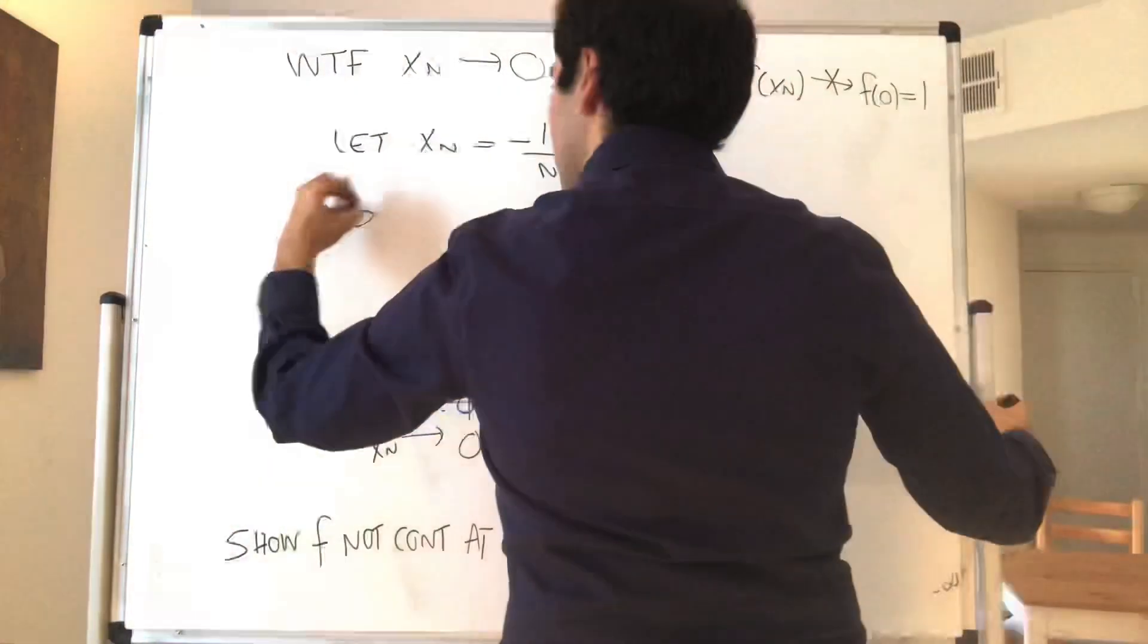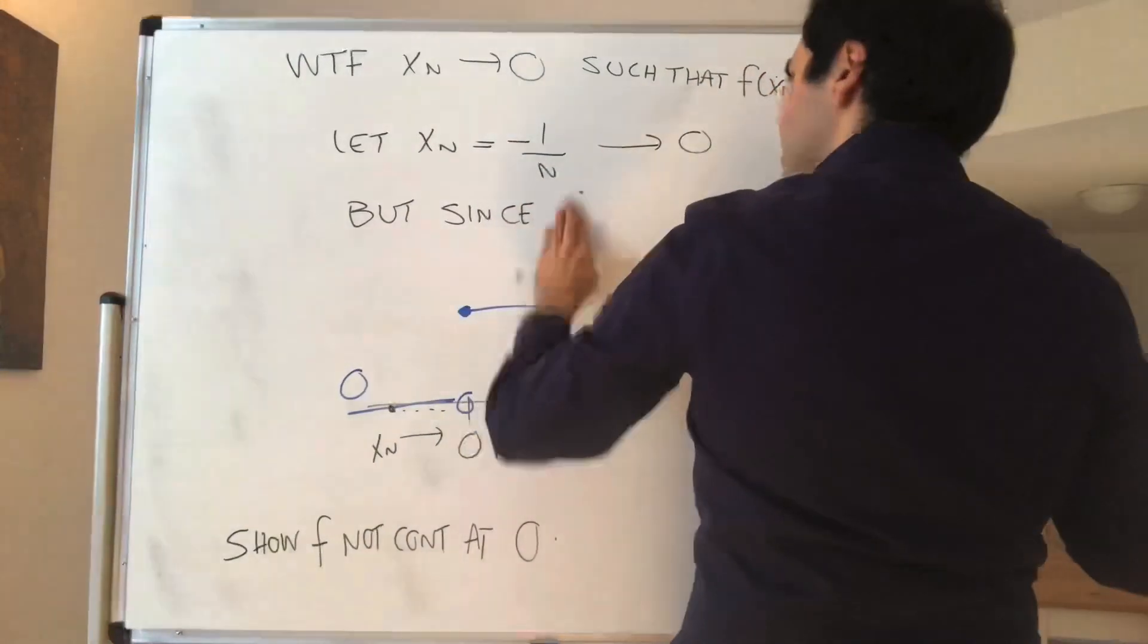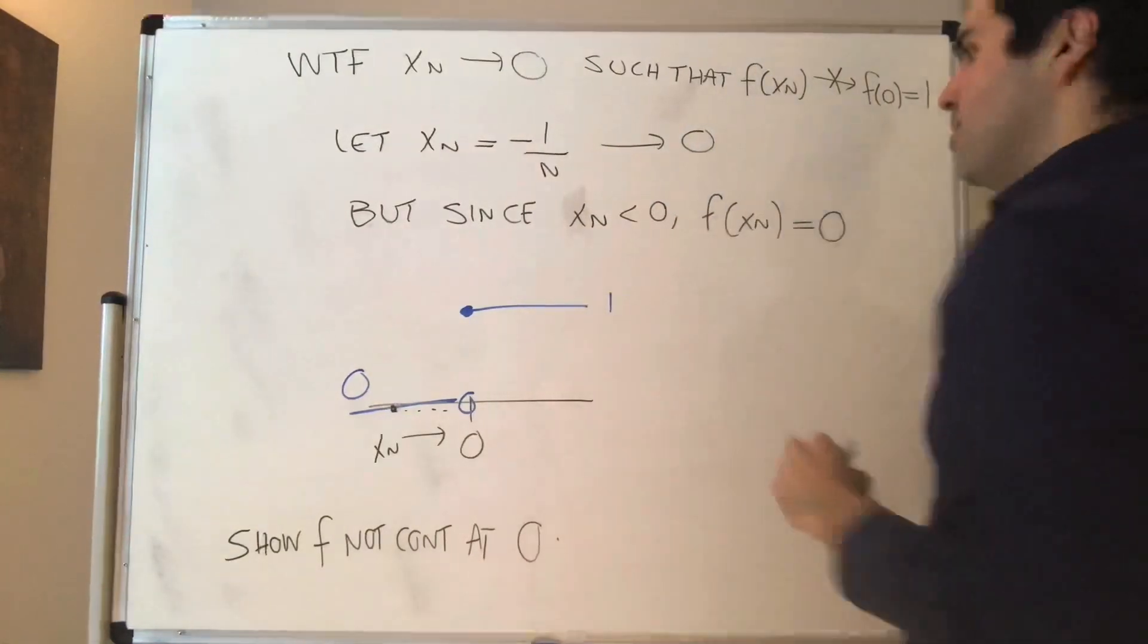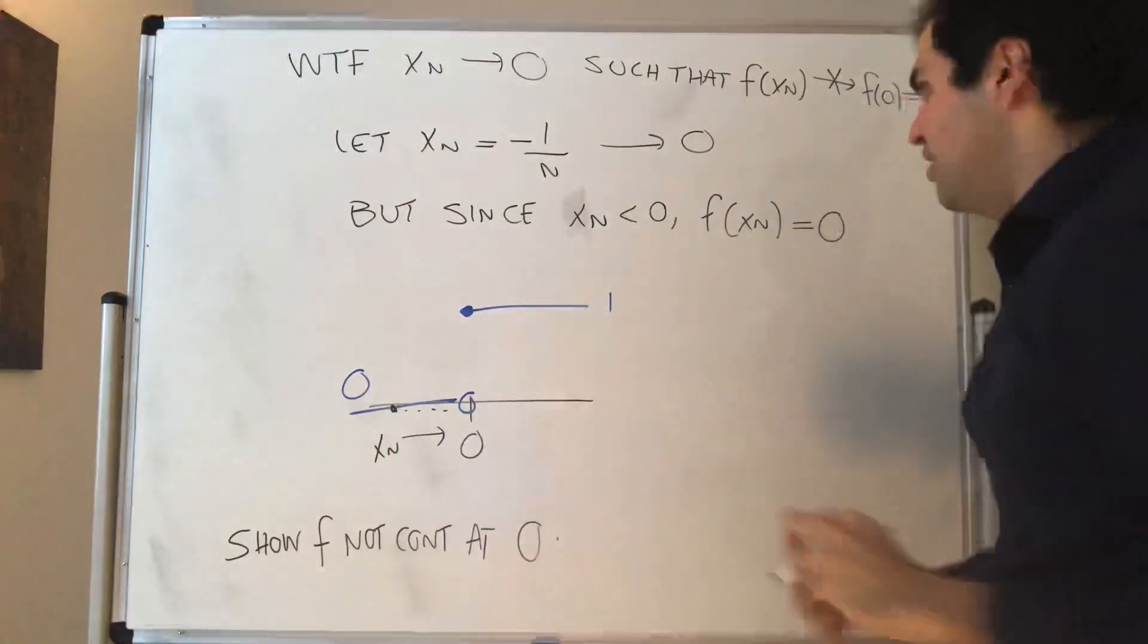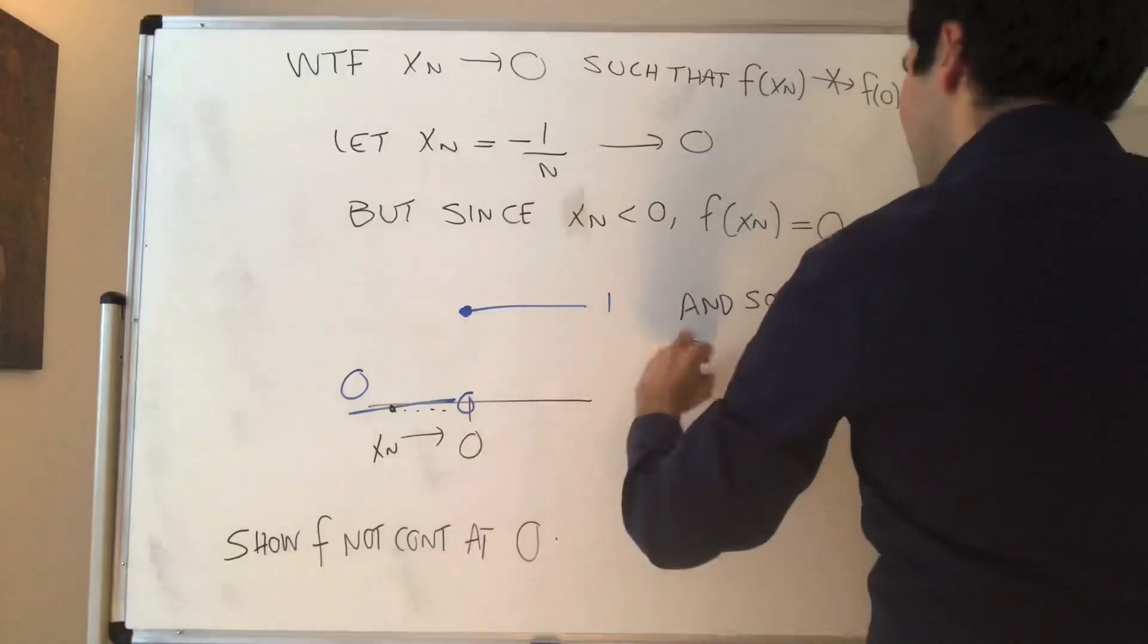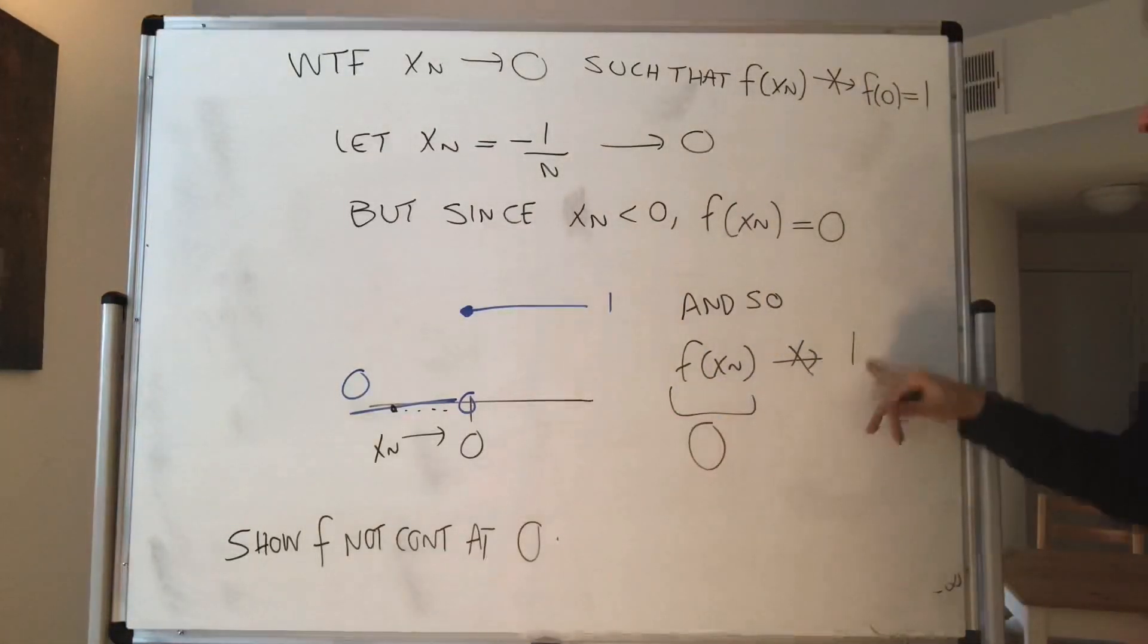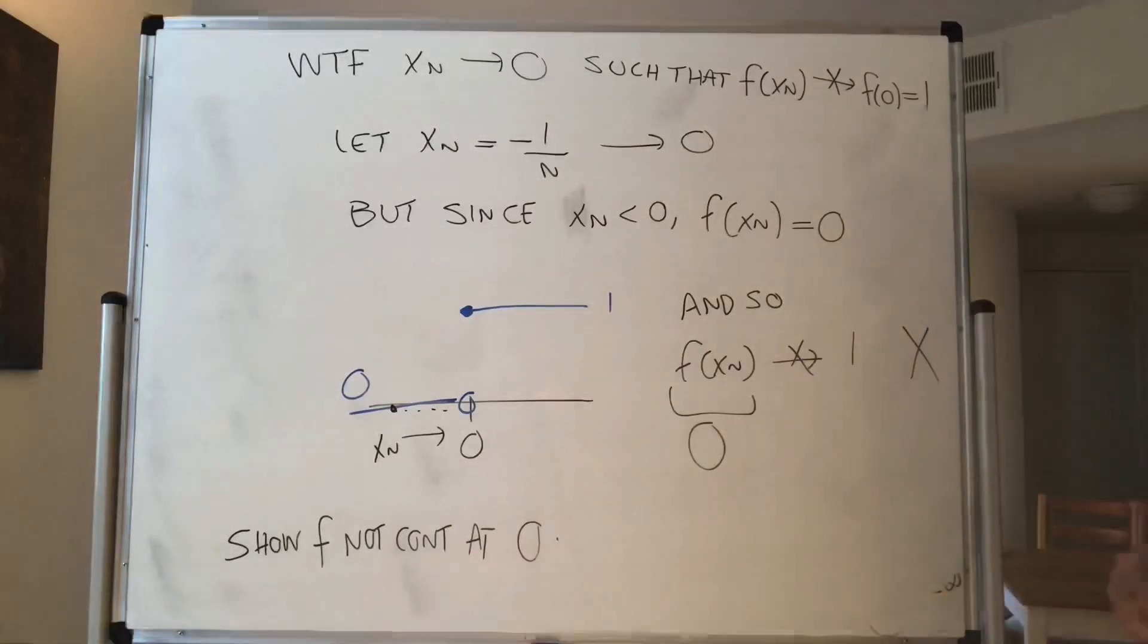Now, but since xn is negative, we know that f of xn is 0. Just by definition of f, f is 0 at negative values and so f of xn cannot converge to 1 because f of xn is always 0. How can the sequence 0 converge to 1? Therefore, f is not continuous at 0.